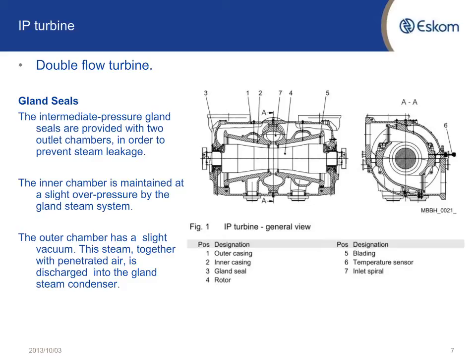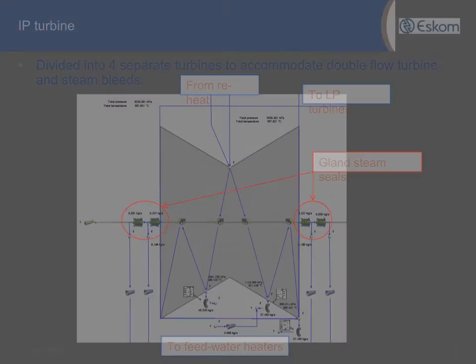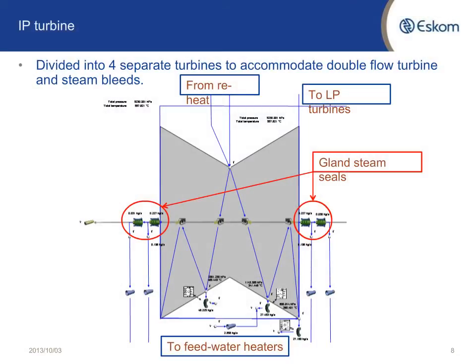That's the reason why I had to split the IP turbine into four separate turbines. In the middle you can see the steam coming in from the reheat, going through the first two turbines, then down through two orifices where the HP steam bleeds are, then going back to the second stage of the turbine, coming out to the next steam bleed, and from there going to the crossovers over to the LP turbines, with two labyrinth seals for the inner and outer chamber of the gland seals.